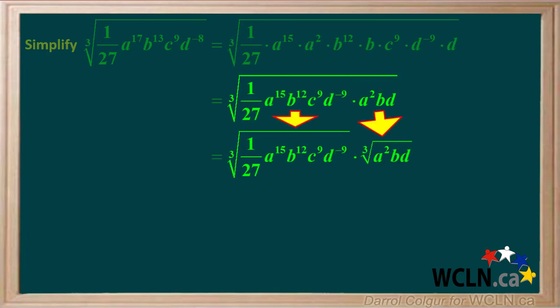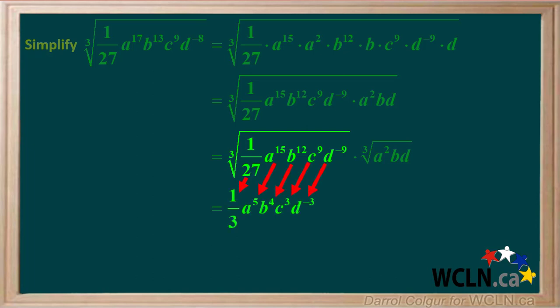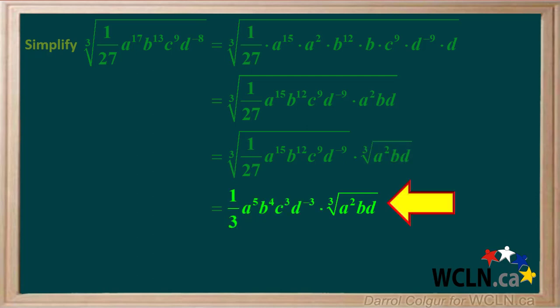Now we'll split the single cube root into two separate cube roots: the cube root of the perfect cubes and the cube root of the leftovers. We'll take the cube roots of all the perfect cubes. The cube root of a squared bd cannot be simplified, so we'll just write it down here the way it is. So we're left with this expression.